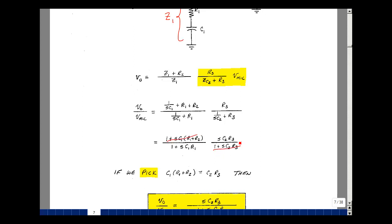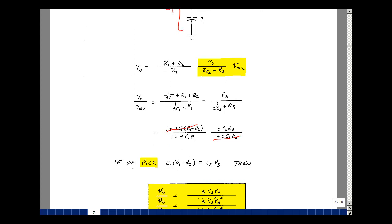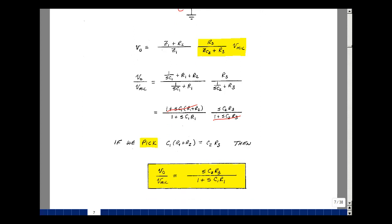If I can pick this term here to equal this term, they'll cancel. To do that, I would need to set C1 times R1 plus R2 equal to C2R3. When I do that, this drops out, and I simply have SC2R3 divided by 1 plus SC1R1. If you recall from ECE 202, this is the form of a high-pass filter.